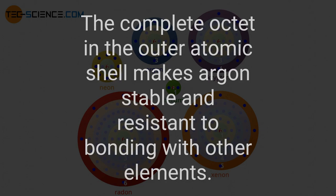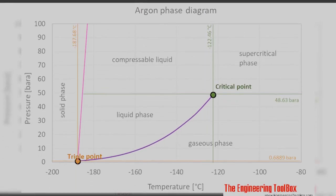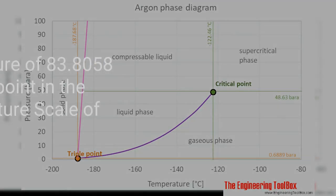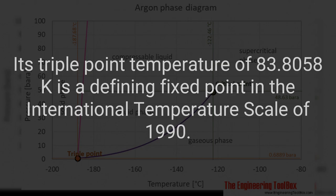The complete octet in the outer atomic shell makes argon stable and resistant to bonding with other elements. Its triple point temperature of 83.8058 K is a defining fixed point in the International Temperature Scale of 1990.